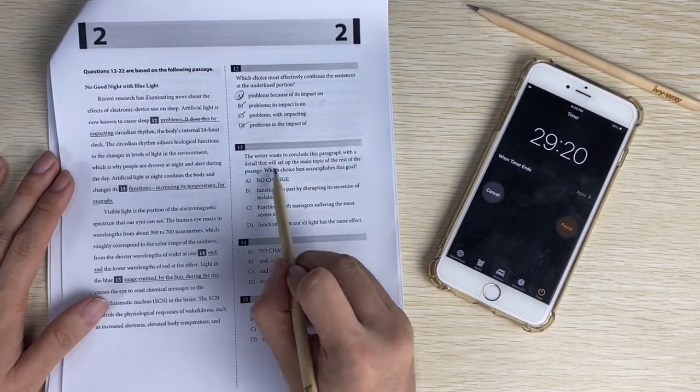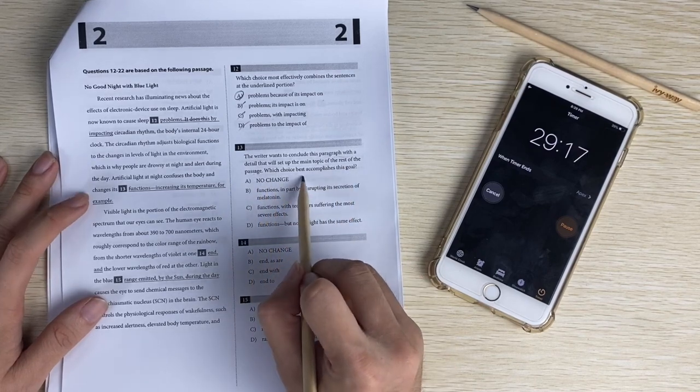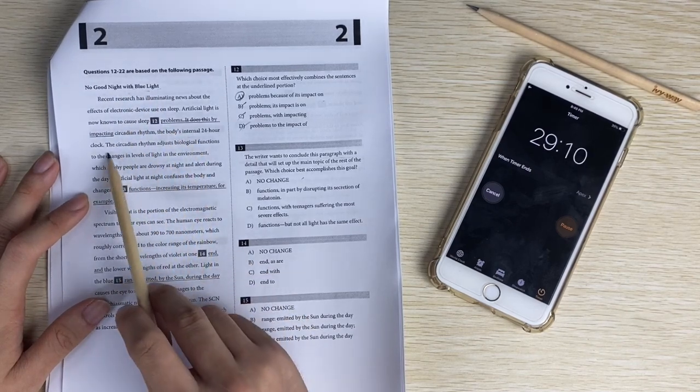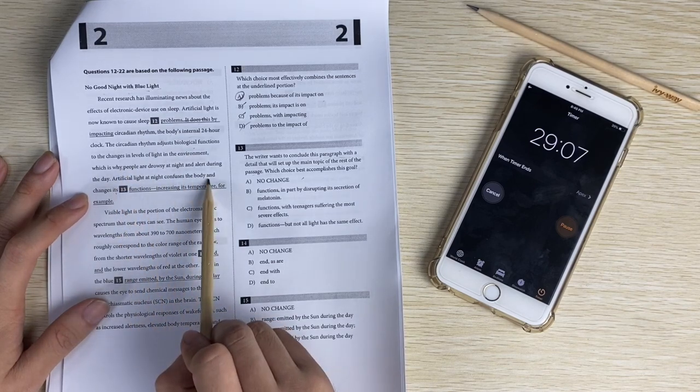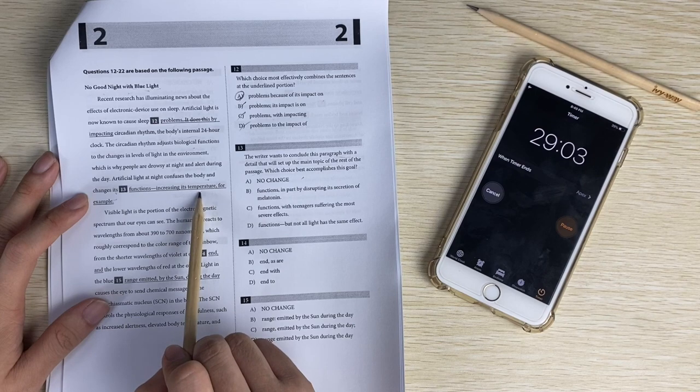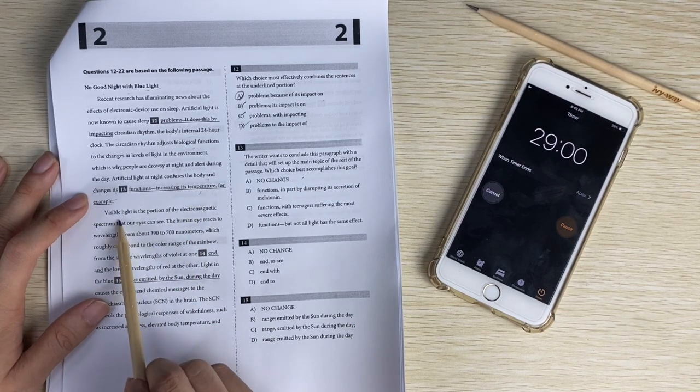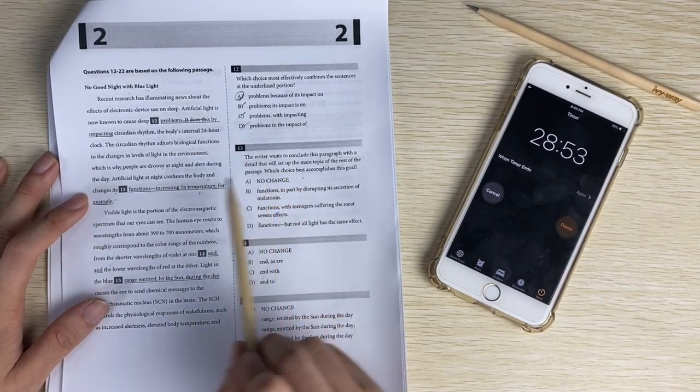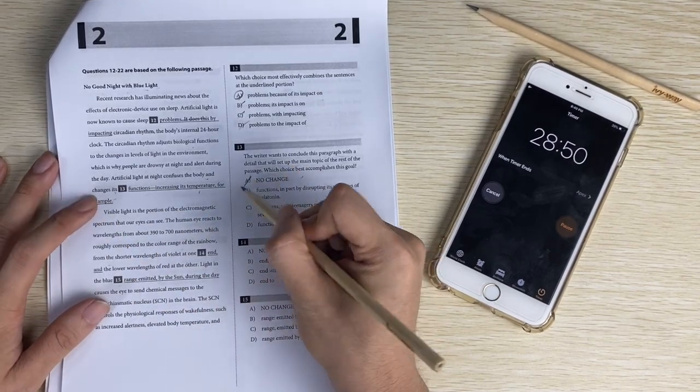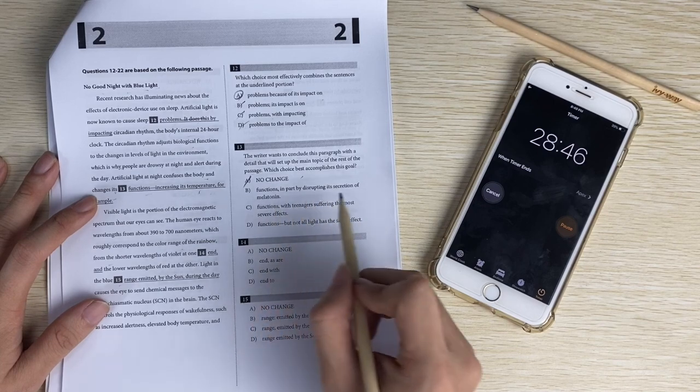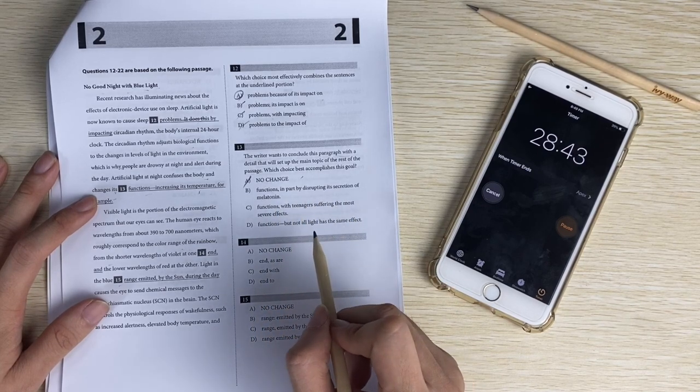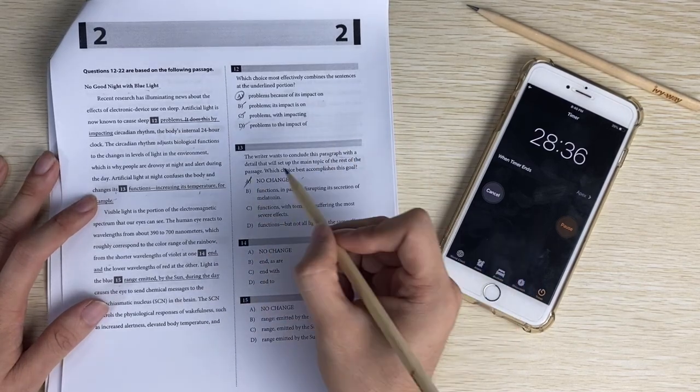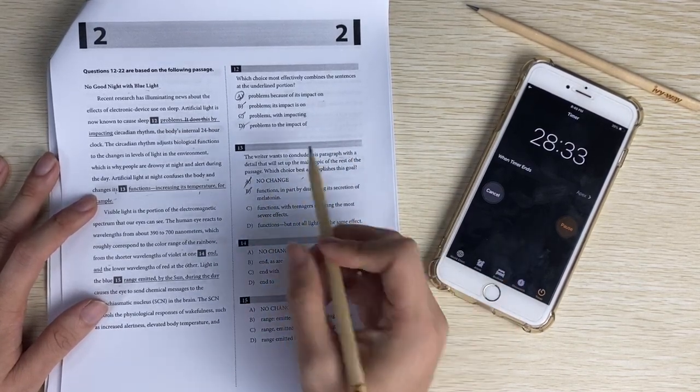The writer wants to conclude the paragraph with a detail for the passage. Something about blue light. Artificial light makes it bad for sleeping. Increasing the temperature for example - not about the temperature. In part be destructing a secretion of melatonin - no. So this paragraph talks about some kind of light, and the next part talks about blue light. So not about melatonin and not about teenagers. The answer is D.